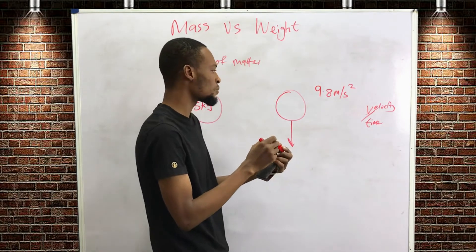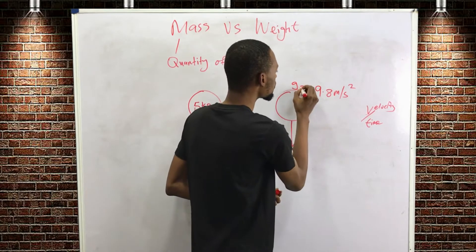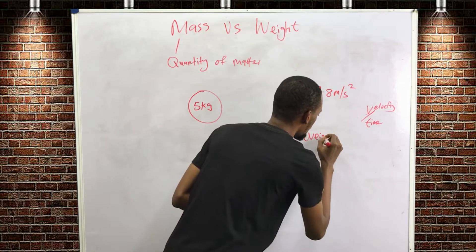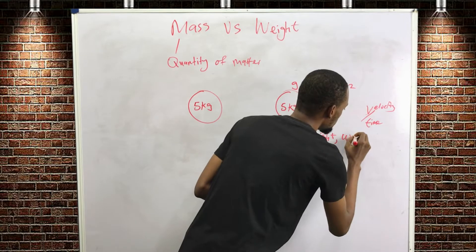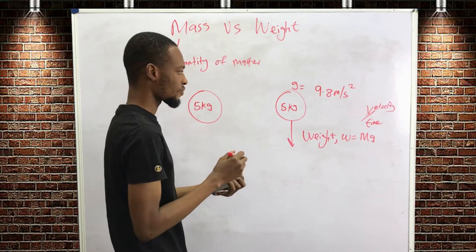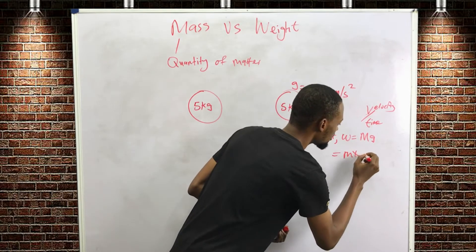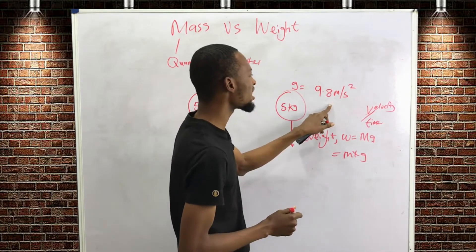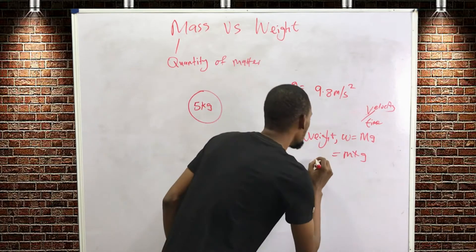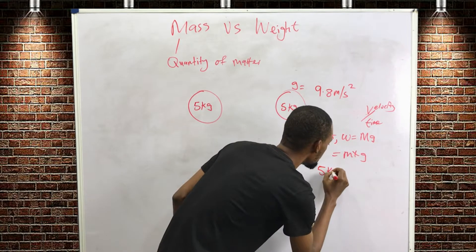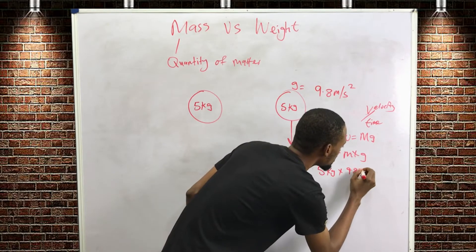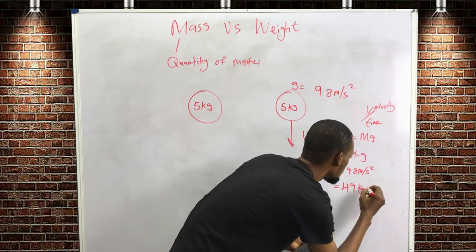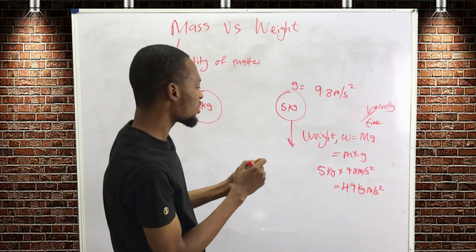g equals 9.8 m/s². The formula for weight is: W equals mass times gravity, W = m × g. For this body of 5 kg on Earth with gravity 9.8 m/s², the weight will be 5 kg × 9.8 m/s² = 49 kilogram meters per second squared.